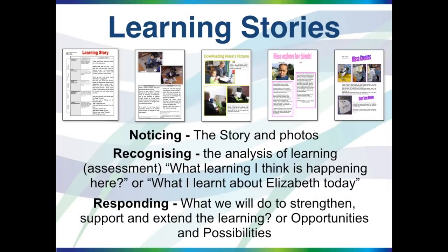I now want to give you an example of a learning story using the three parts I've already talked about. The first part: the noticing. This is the section that is the story and includes the photographs. The second part: the recognising. This is the section that provides the analysis of the learning. It is at this point that the story becomes a learning story — this is the actual assessment. For example, 'What learning do I think is happening here?' or 'What did I learn about Elizabeth today?' The third part: the responding. This is the individual planning for the child — what will we do to strengthen, support, and extend the learning? Or alternatively, we might use 'opportunities and possibilities' as a heading.